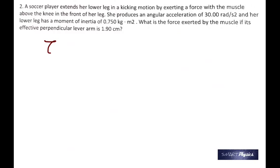Second question: a soccer player is kicking the ball and exerting a force with the muscle above the knee in the front of her leg. She produces an angular acceleration, so that's alpha. And her lower leg has a moment of inertia, that's I.